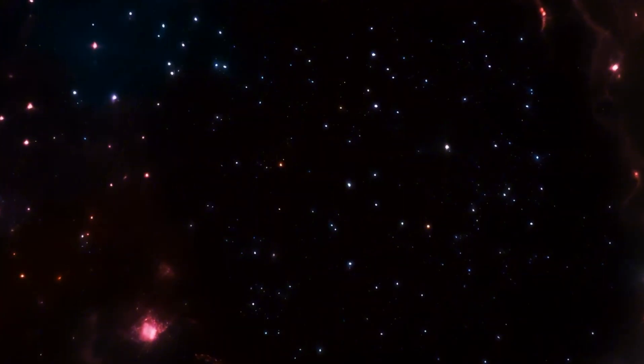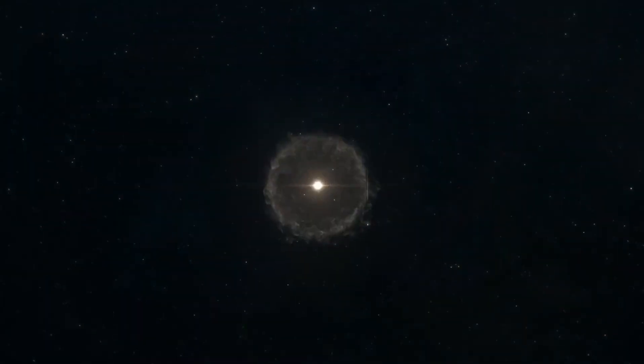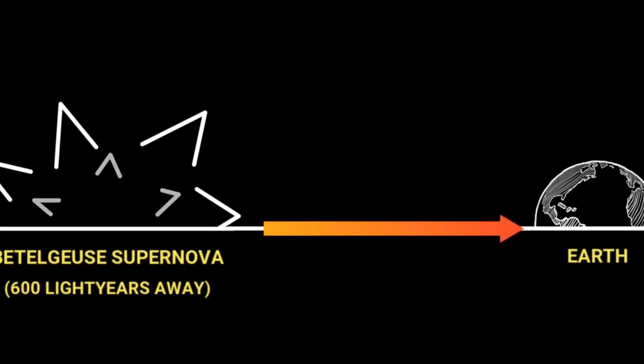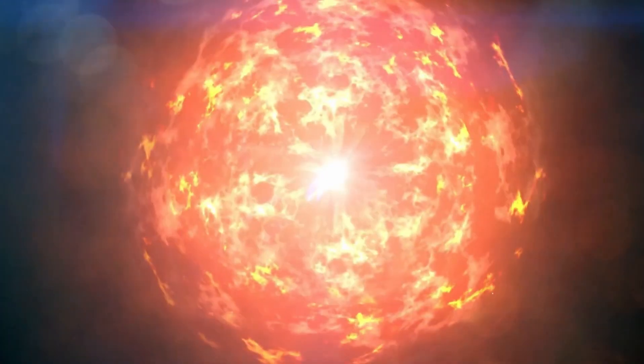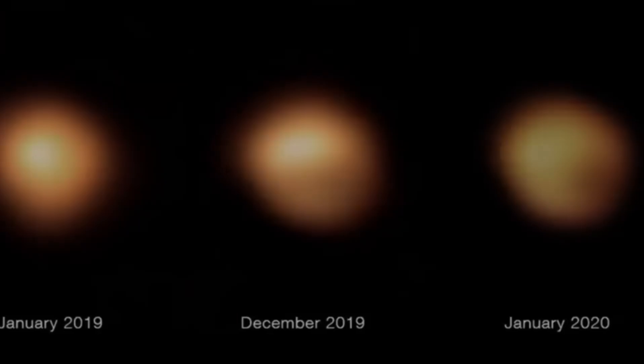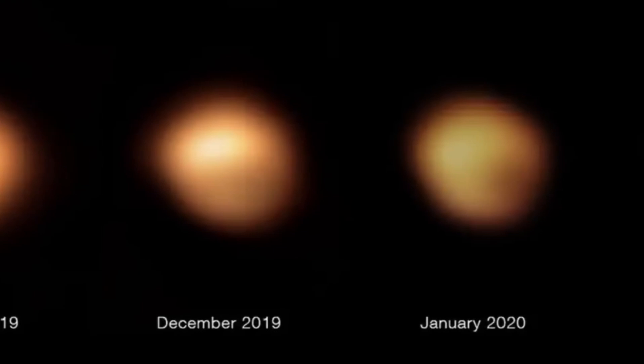Well, ASASSN-15lh was located in another galaxy. Betelgeuse, however, is in our cosmic backyard. This proximity means Betelgeuse's supernova would be incredibly bright, potentially outshining even Sirius, the brightest star in our night sky, and it would likely remain visible for weeks.